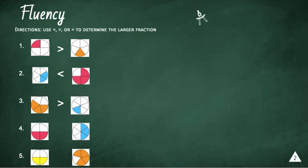Let's look at number 4. We have 2 4ths and 3 6ths. Which is the larger fraction? These fractions are equal. They both equal one half.